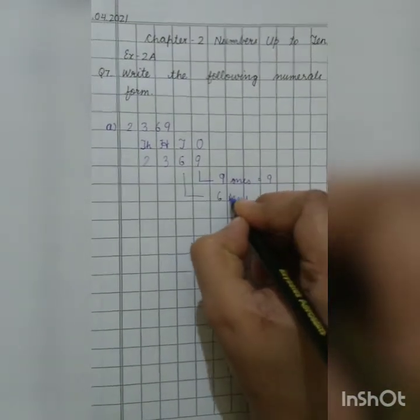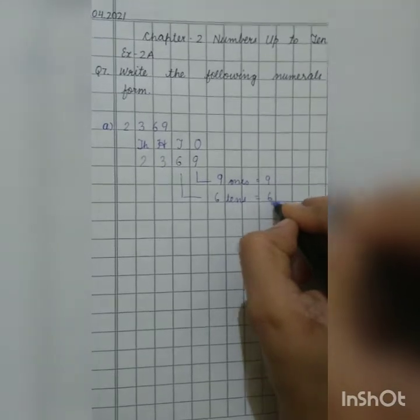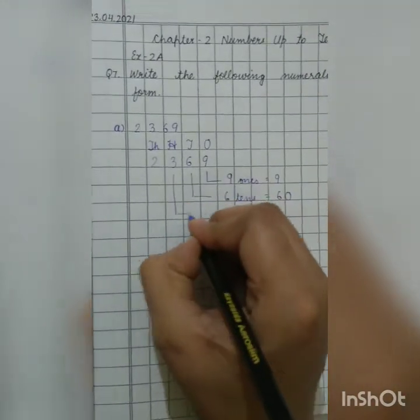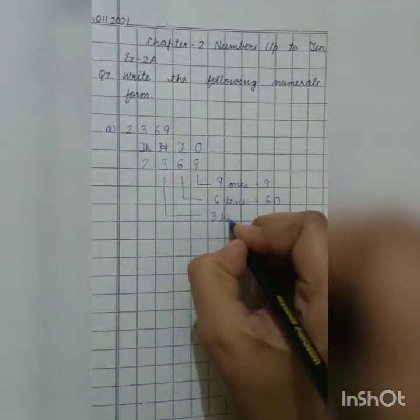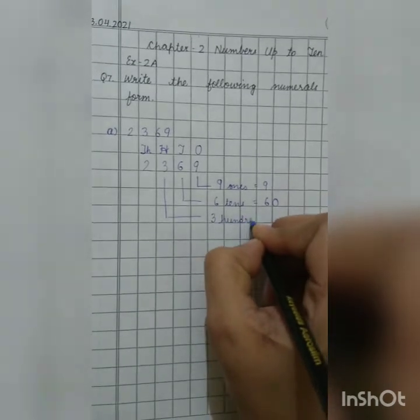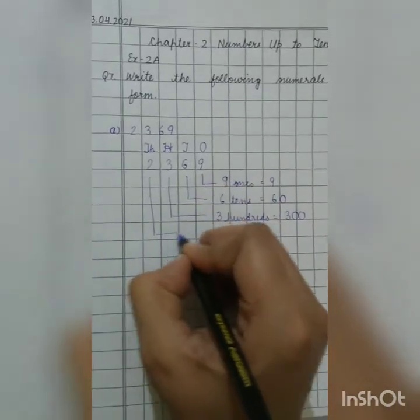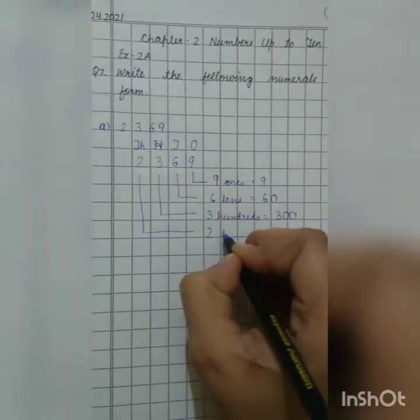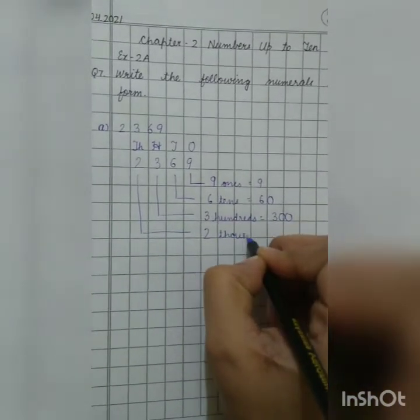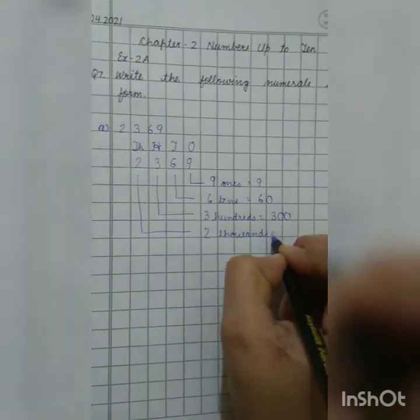6, 10's. 6, 10's is 60. 3, 100's. 3, 100's is 300. And 2, 1000's. So now it's easy for you to expand them.